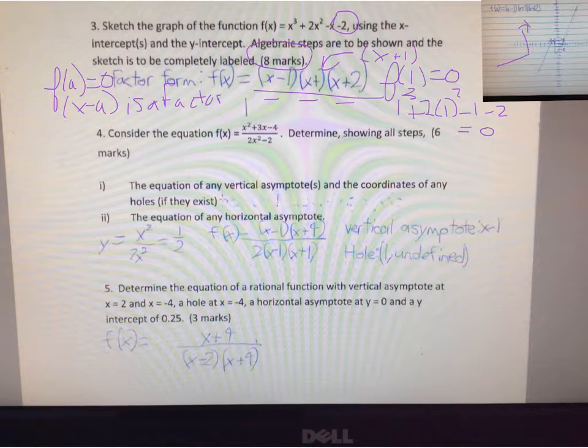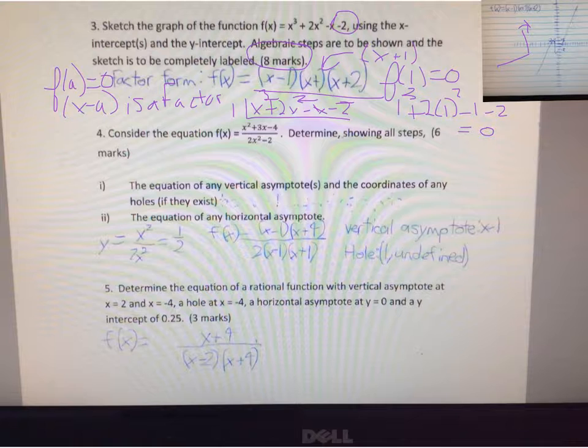Once you've done that, then you have to set up your synthetic division. And you're going to then put your value of one here and find the resulting trinomial or quadratic equation that you get when you take the first root out of the equation. Then you need to show factoring of that quadratic in order to get the second and the third factor. So all that work needs to be there in order to get full marks on a question like this.